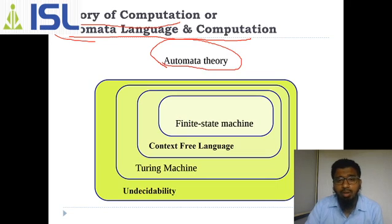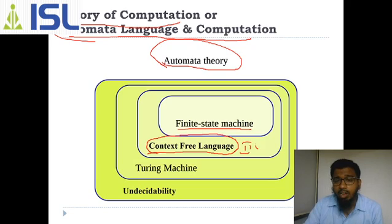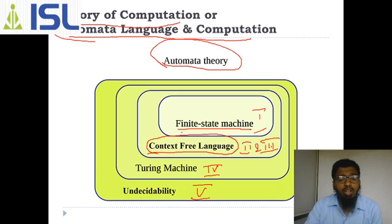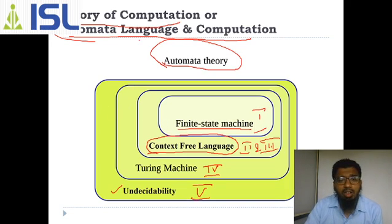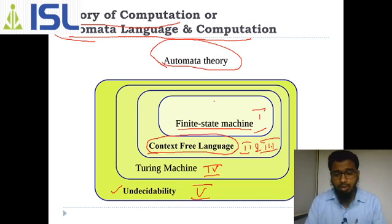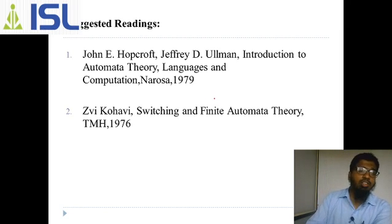Looking at the diagram: the first item is finite state machine in unit one, then context-free language or context-free grammar covered in units two and three, then Turing machine in unit four, and undecidability in unit five. Whatever we cannot solve goes to Turing machine; it helps work faster. This covers automata language and computation, automata theory, or theory of computation — all the same.